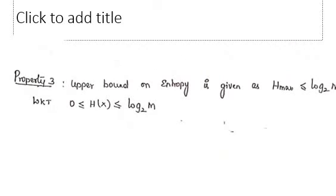The third property is that the upper bound on entropy is given as H(X) maximum ≤ log M to the base 2. The maximum value of entropy is less than or equal to log M to the base 2. As seen in the first slide, the value of entropy lies between the lower bound of 0 and up to log M to the base 2.